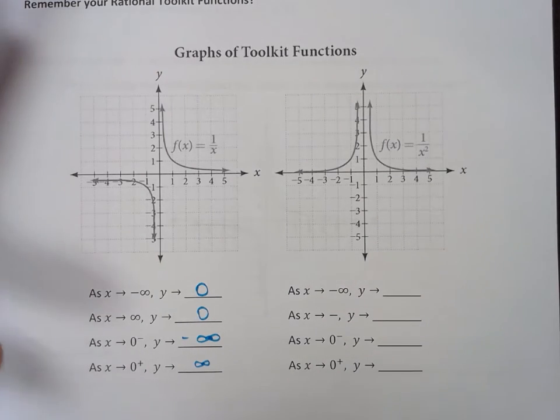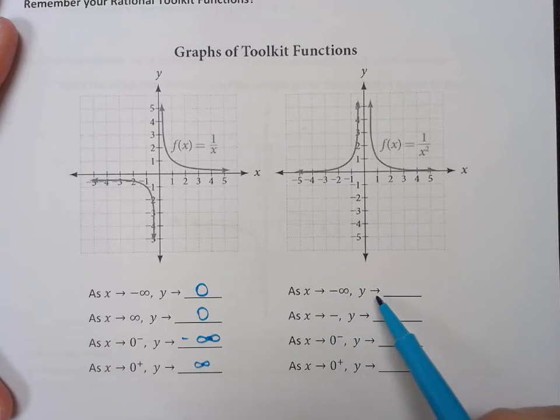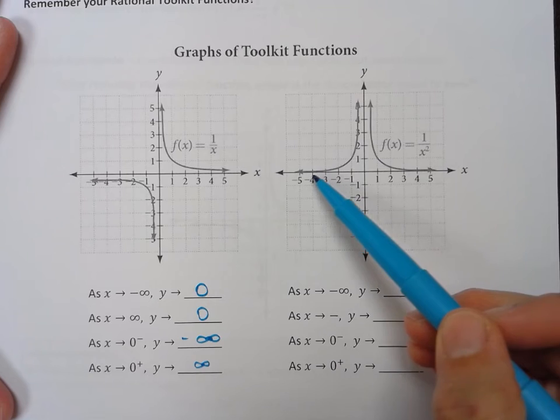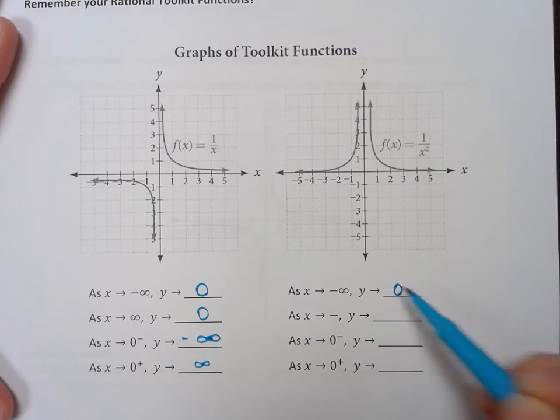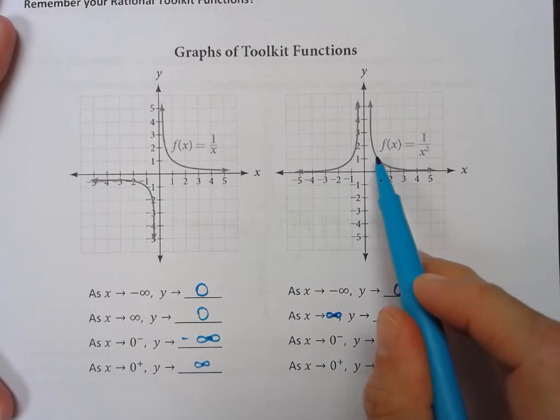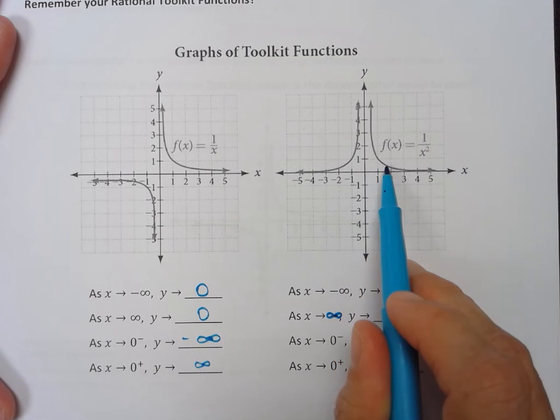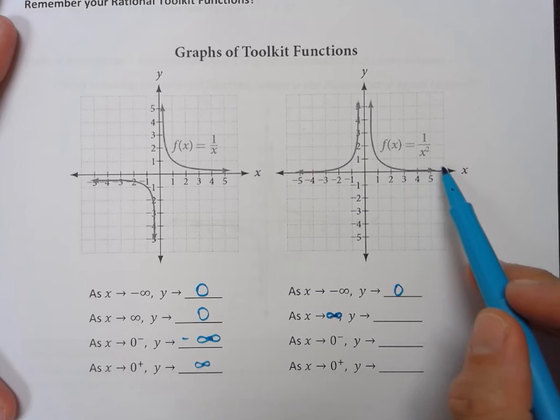So let's look at this one. As x goes to negative infinity, y goes to what? As x gets smaller, y gets closer and closer to zero. I think that's supposed to say infinity right there. As x goes to infinity, so as x is getting bigger and bigger and bigger, y is again going to the x-axis, which is where y is equal to zero.